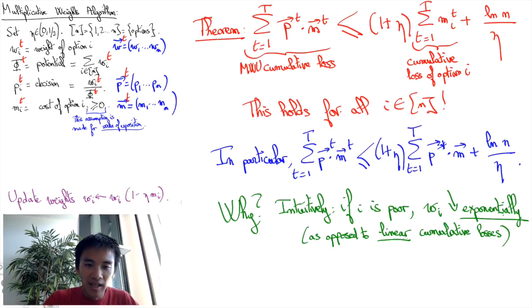So intuitively, the key here is really the exponential growth or decrease which will be much quicker than the linear additive cumulative gains that we are interested in.